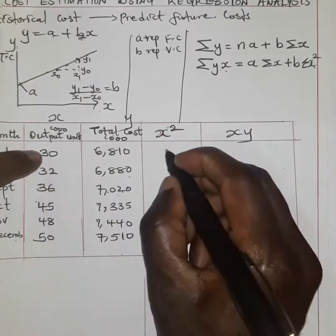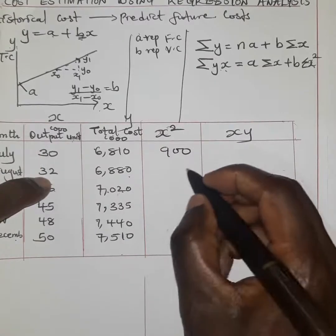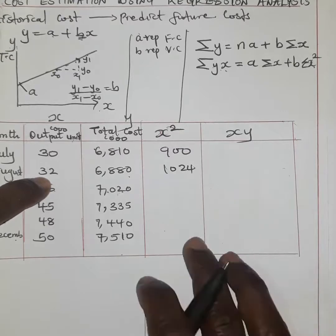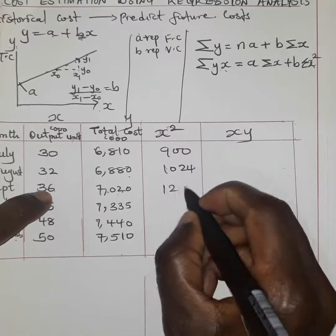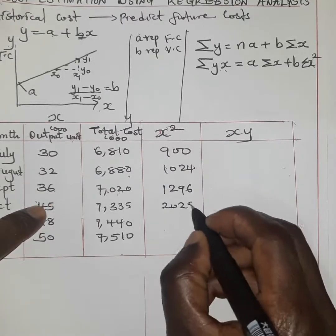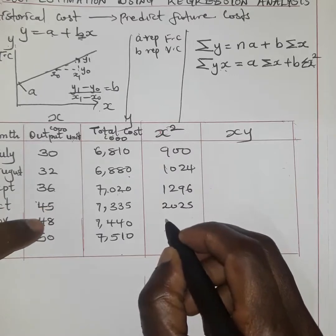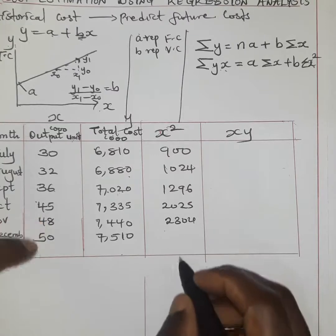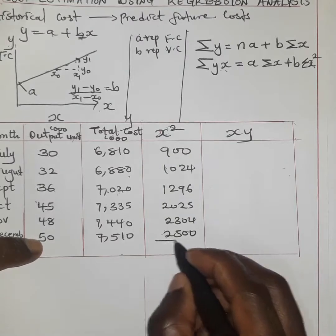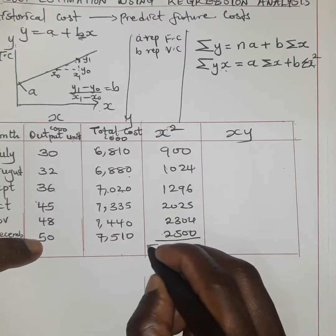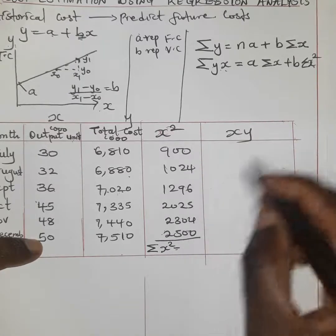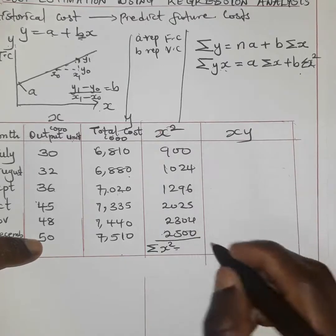We square everything along the x column: 30² = 900, 32² = 1024, 36² = 1296, 45² = 2025, 48² = 2304, and 50² = 2500. When we add all these values for the summation of x² we get 10,049.